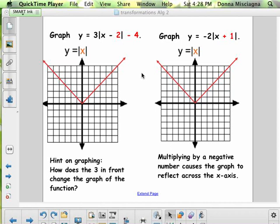That's because we've basically got two linear functions here, but instead of having any negatives on our linear function, we just have positive because the absolute value is always positive. Hint on graphing: how does the 3 in front change the graph of the function?